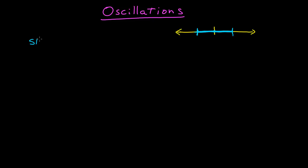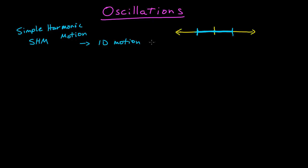Quantitatively, what I want to describe is simple harmonic motion. Simple harmonic motion is one-dimensional motion described by a sinusoidal function — that is, 1D motion mathematically described by a sinusoidal function. And sinusoidal function means either a sine function or a cosine function.